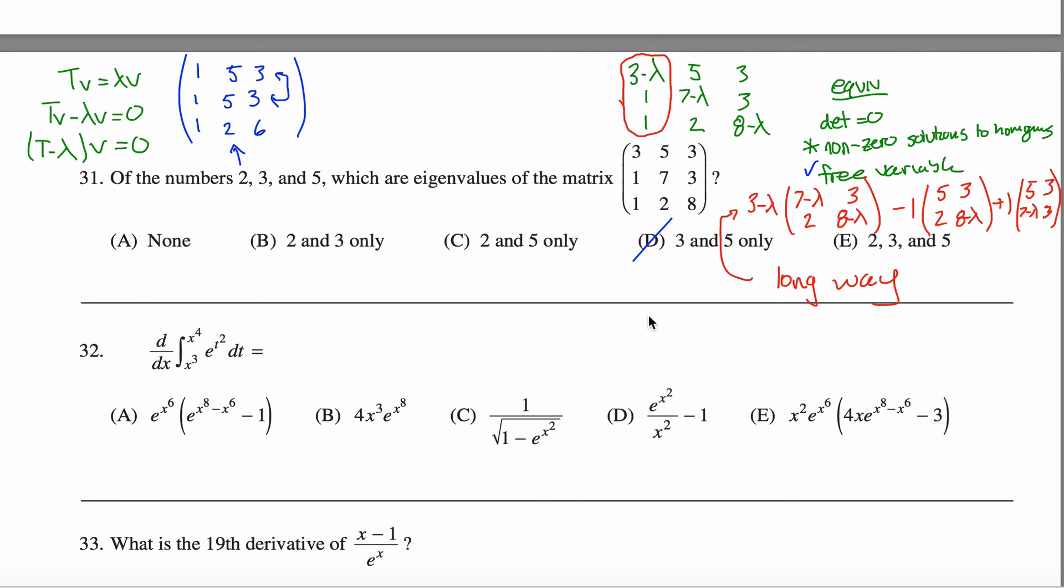So that means this is not my answer and this is not my answer. What about 3? Well, I can test 3 in the exact same way. All I got to do is subtract 3 from all the values on the diagonal. So that makes this a 0, 5, 3 and then this would be 1, 4, 3 and this would be 1, 2, 5.